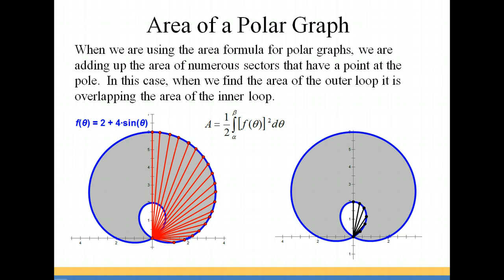When we're using the area formula for polar graphs — which is one half times the radius length squared, or f(θ) squared, dθ — what we're really doing is adding up the area of numerous little sectors that all start with a point at the pole and go to the graph.